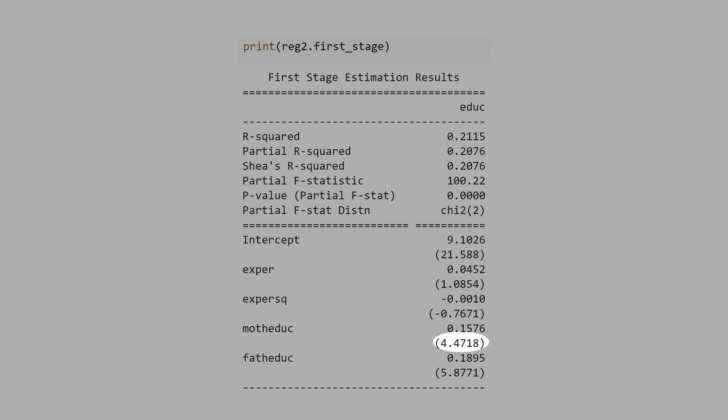The t-value of mother education is 4.4, and the t-value for father education is 5.8. Therefore, both IVs are statistically significant. They have power to explain education.